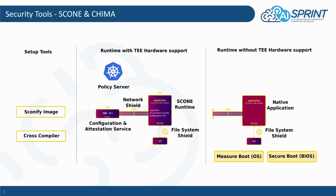In addition to that, we have the configuration and attestation service, which provides attestation for all the services that run in AI Sprint, along with the configuration service, which provides the keys needed to access data in a secure manner. We also have the policy server, which provides access policies for the Chima component, which provides security for network access of components such as edge devices that access the infrastructure with a 5G network. For components that cannot run with TE support or where we don't have TE-capable CPUs on the physical nodes, we use secure and measured boot, which provides a good foundation to verify if an operating system has been manipulated or not.